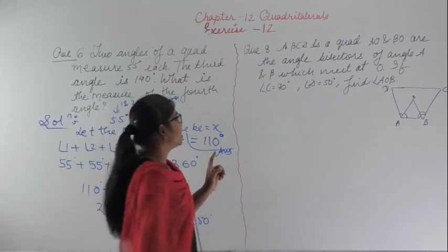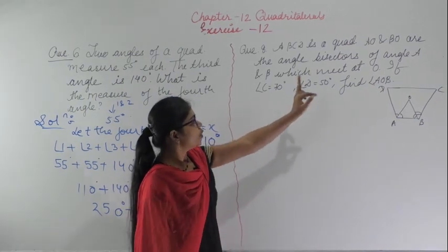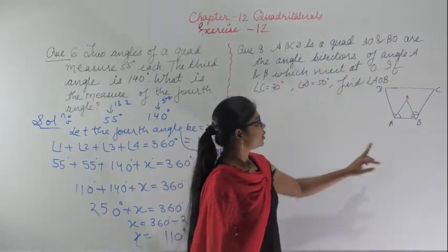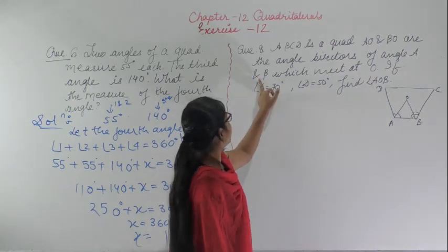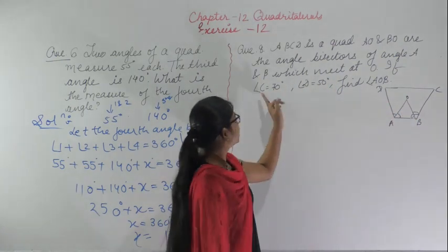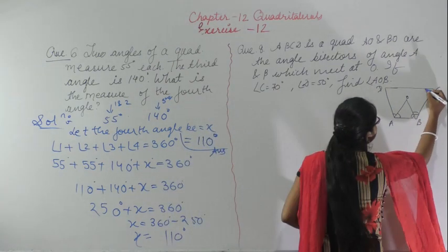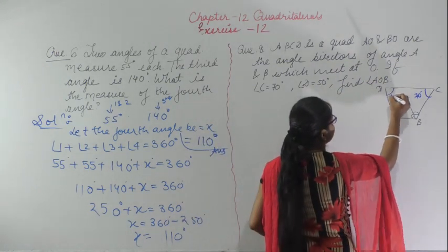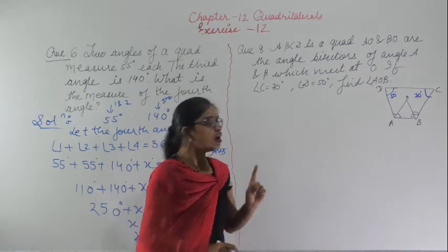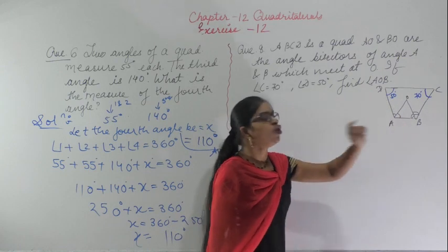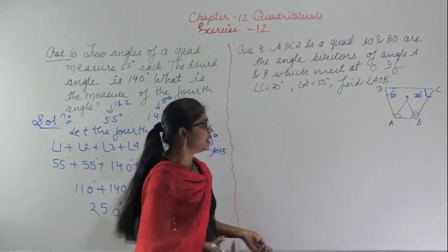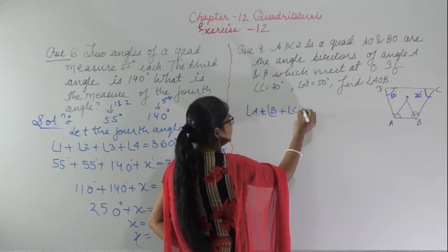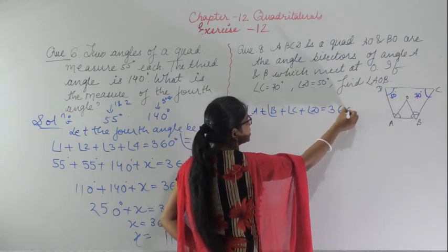Question 8: ABCD is a quadrilateral. AO and BO are the angle bisectors of angle A and angle B, which meet at point O. If angle C is 70 degrees and angle D is 50 degrees, find angle AOB. Using the property that angle A plus angle B plus angle C plus angle D equals 360 degrees.